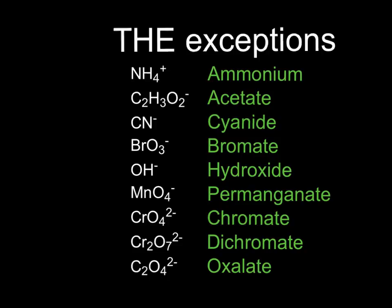A lot of them come from the names of the elements themselves, like bromate, permanganate, chromate, and dichromate. And ammonium is the only one you have to know with a positive charge. It's a lot easier trying to memorize this small list than tackling the whole big list. Hopefully these devices helped you out a little bit on your polyatomic ions quiz and make remembering the entire list a little bit easier.